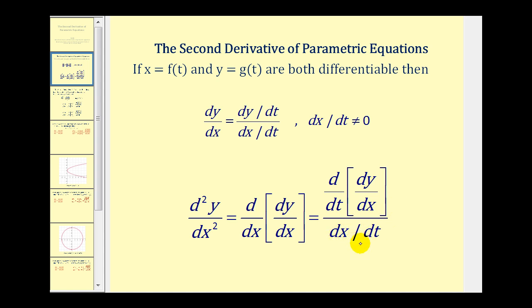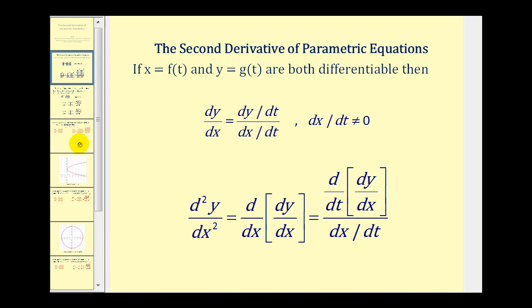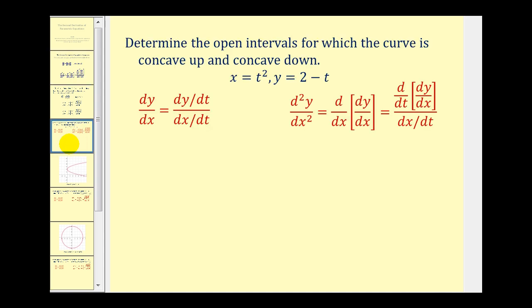This gives us the second derivative as long as both x(t) and y(t) are differentiable and dx/dt does not equal zero. Now these examples we're going to look at are the same ones we used when finding the first derivative and tangent lines, but now we'll talk about the second derivative and concavity. Before we can find the second derivative, we do have to find the first derivative, so let's review that.